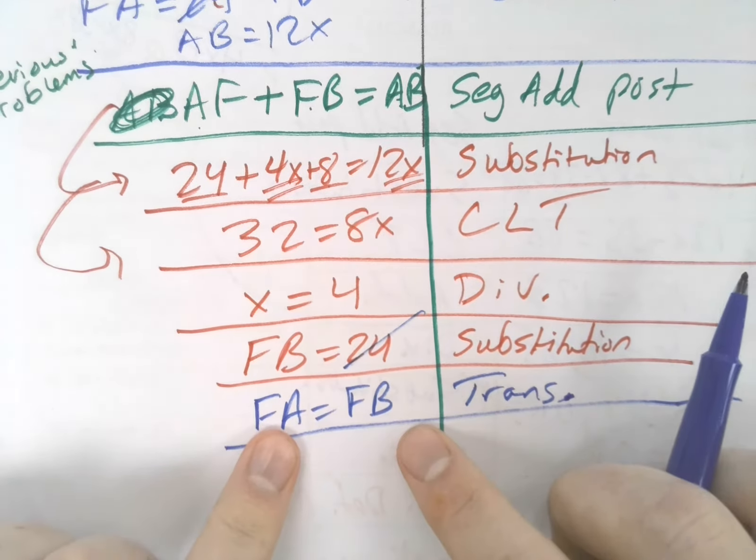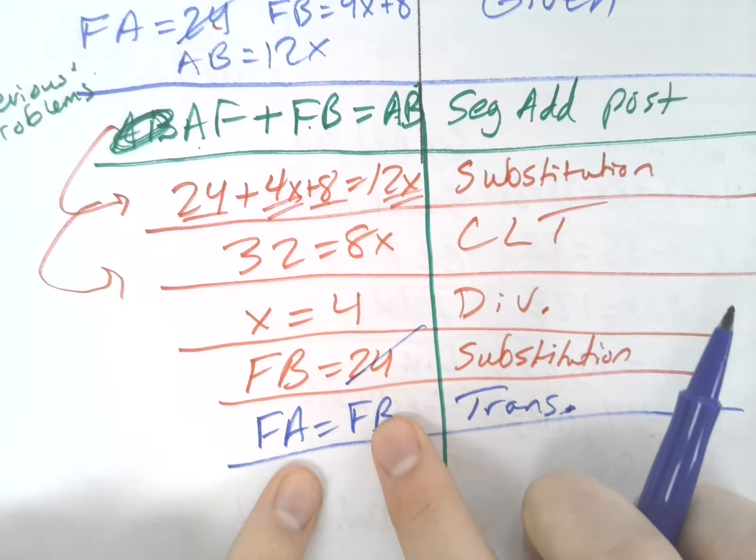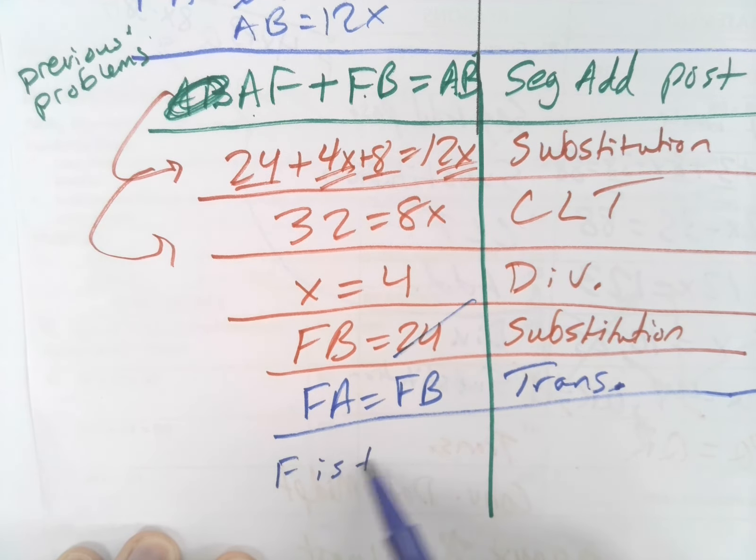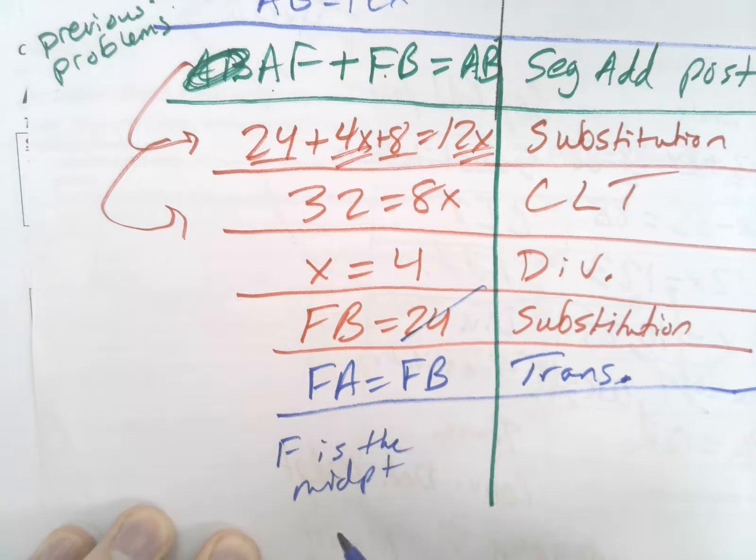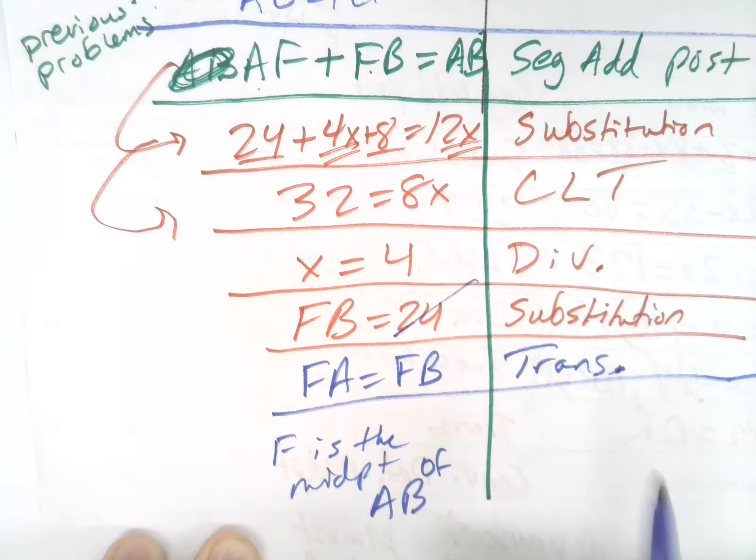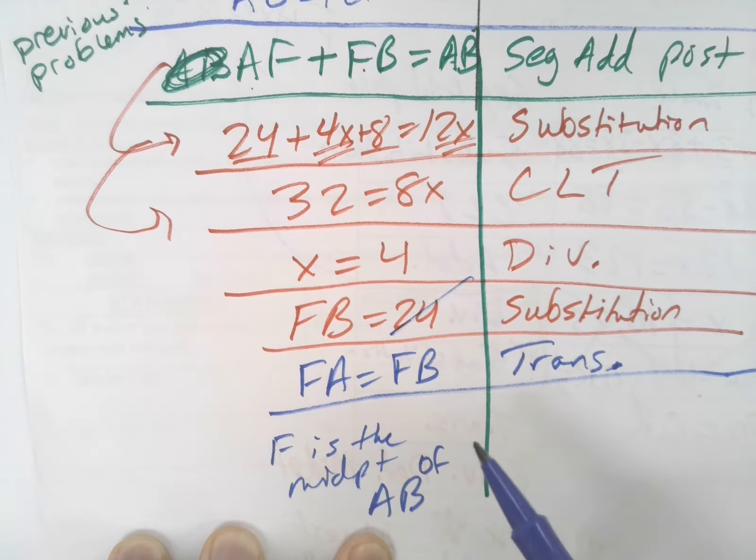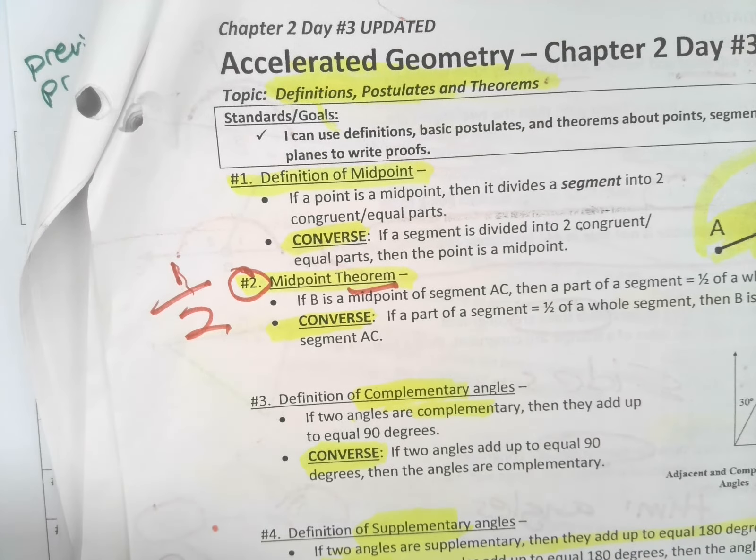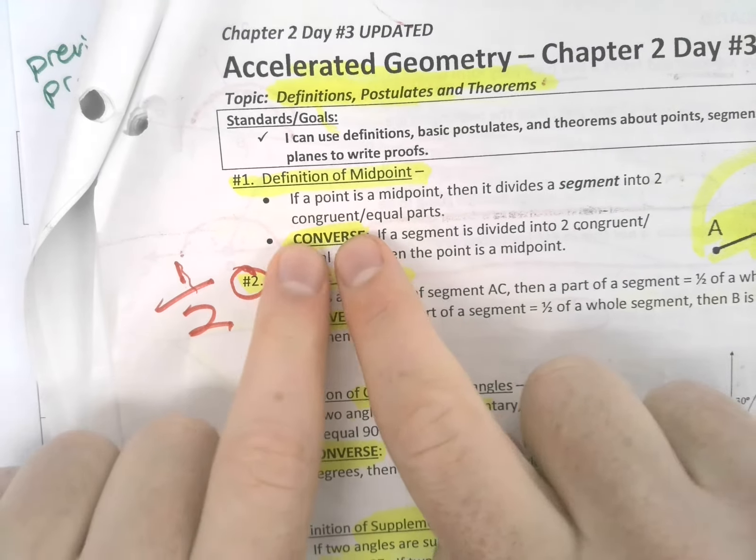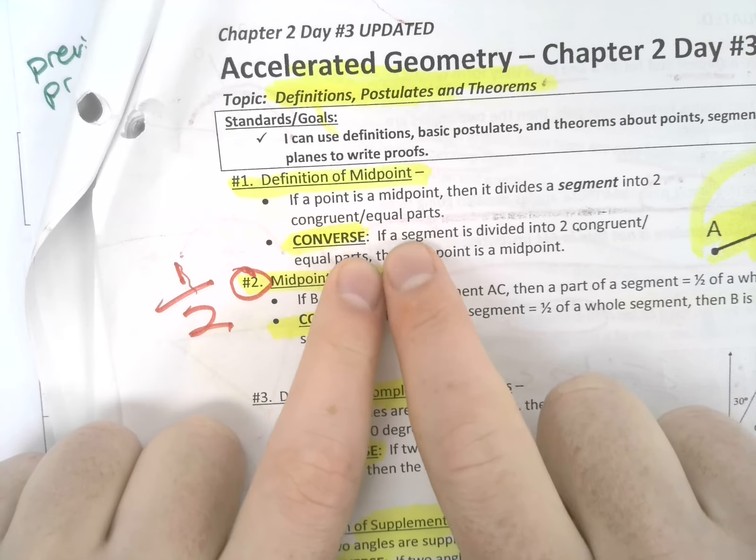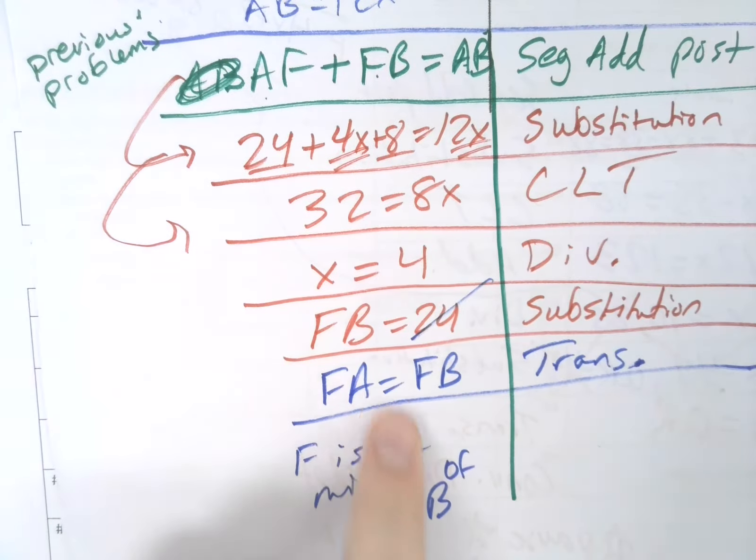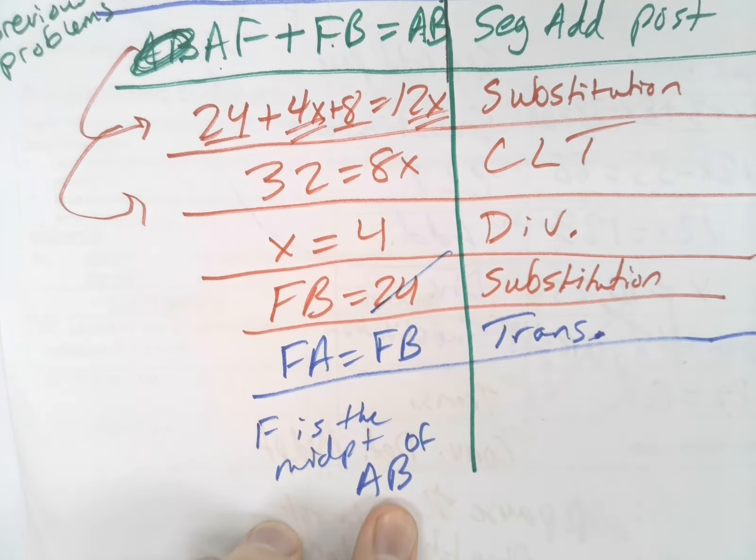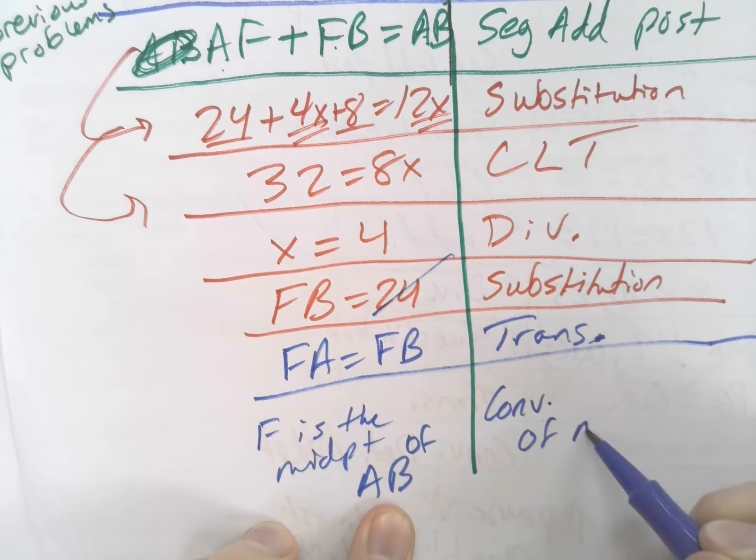Based off us proving that these are both 24 and they're both equal to each other, we can now say F is the midpoint of AB. And how can we say that? We're talking once again about the converse of the definition of a midpoint. If two segments are congruent, which we just proved, then the point is a midpoint.